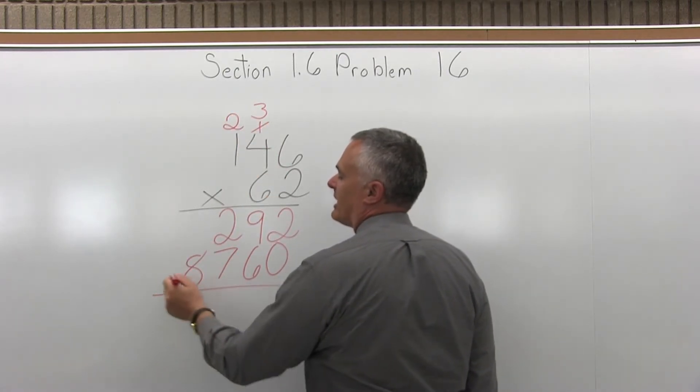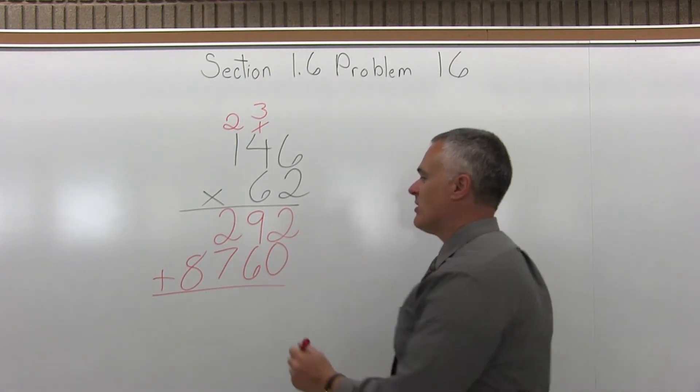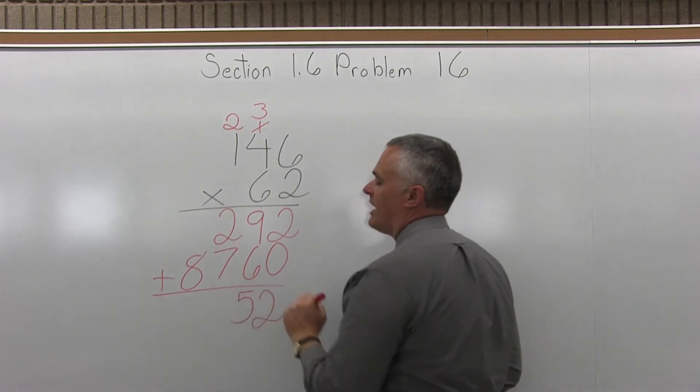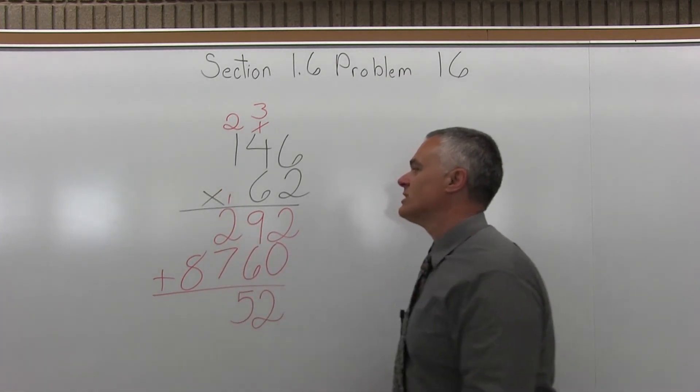And now I can add the 2 rows of numbers. So starting from the right column, 2 plus 0 is 2. Then I have 9 plus 6 is 15. So for 15, I write down the 5 from the 15 and carry the 1 to the next column over to the left.